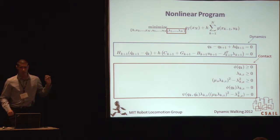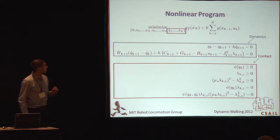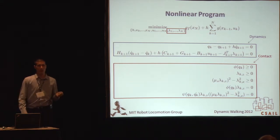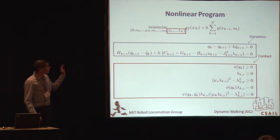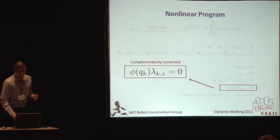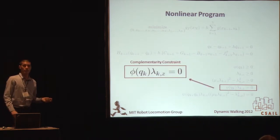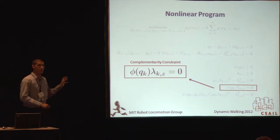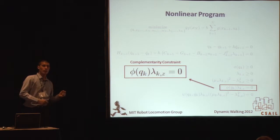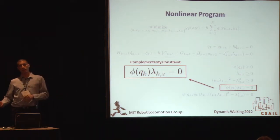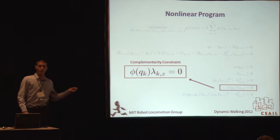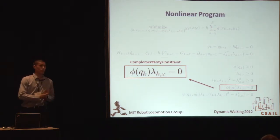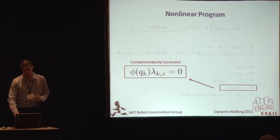This is what the resulting nonlinear program looks like. The lambda forces are the contact forces — they are optimization parameters. We have dynamics and contact constraints, and I'll highlight the complementarity constraint: if phi is our guard function and lambda is our force, the complementarity enforces that we don't have contact forces occurring at a distance. So we're either in contact with the ground (phi equals zero) and can have an arbitrary force greater than zero, or we're not in contact and we can't have a force.